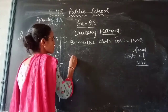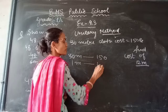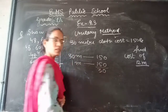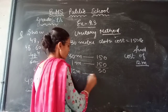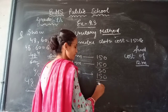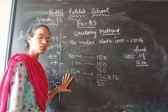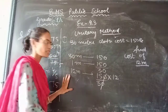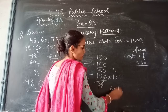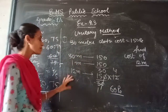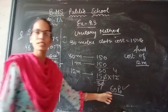30 meters of cloth costs ₹150. So 1 meter costs 150 divided by 30. And 12 meters cost 150 by 30 multiplied by 12. Simplifying, 3 goes into 30 ten times and into 12 four times, giving 60 rupees. So 12 meters of cloth costs ₹60.